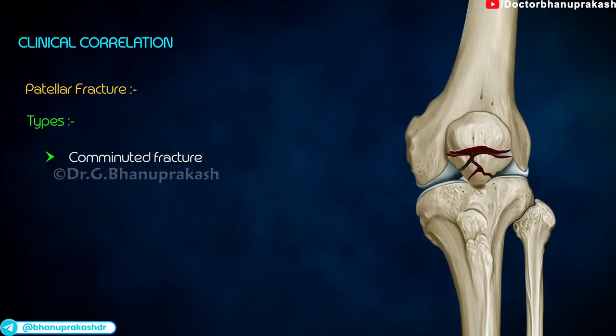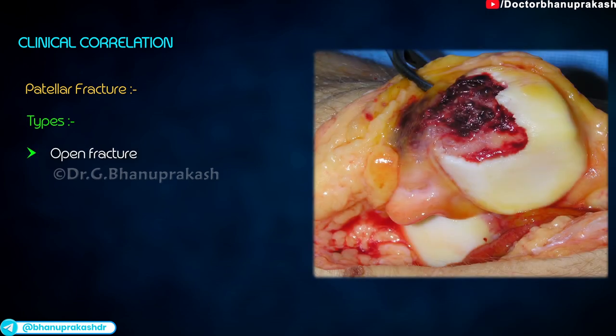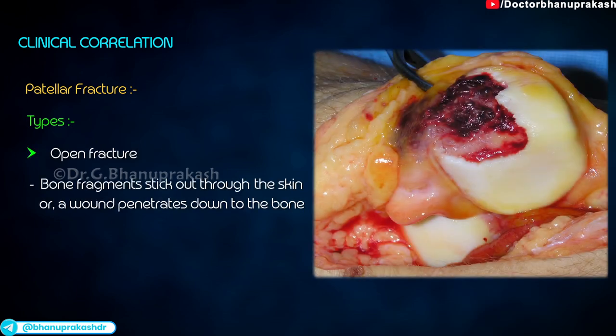Comminuted fracture: the bone shatters into three or more pieces. Open fracture: the bone breaks in such a way that the bone fragments stick out through the skin, or a wound penetrates down to the bone.